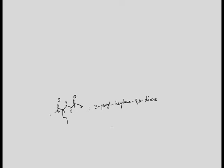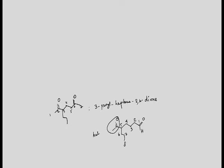Now if you take the aldehyde side — what will be the nomenclature? The aldehyde group is the main group here and this is the longest chain: 1, 2, 3, 4, 5, 6, 7, 8. This is the longest chain and on this side the keto group is there. You do not need the keto group incorporation because this will be 7. So the nomenclature will be 5-acetyl octanal.